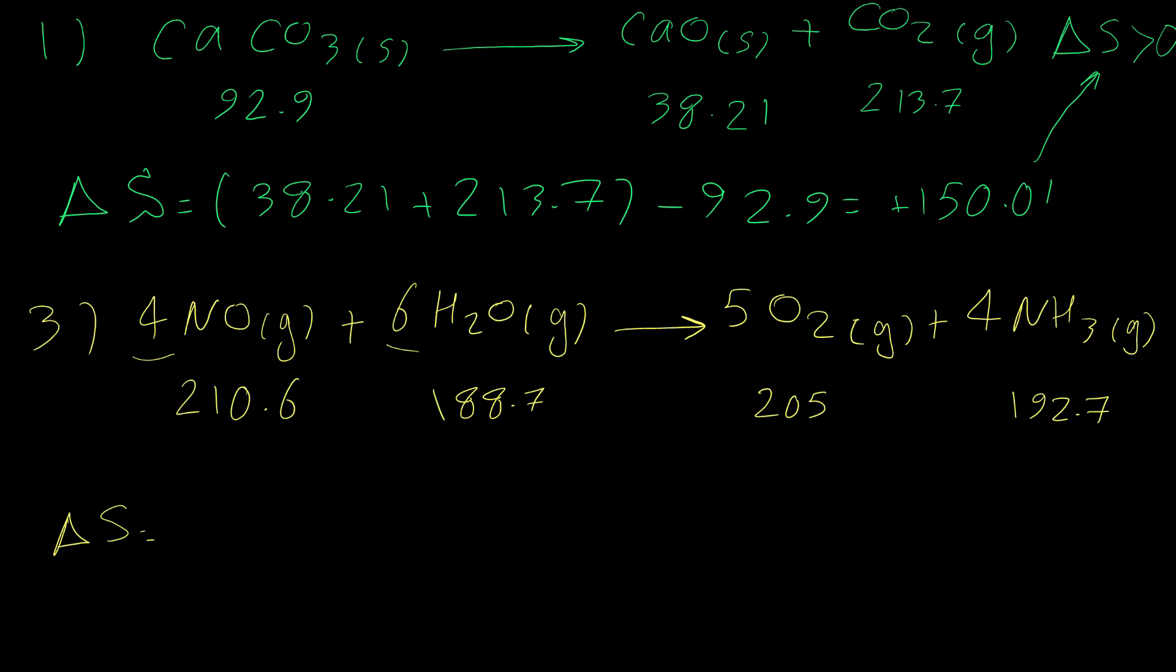For the third example, again delta S equals products, so for oxygen we have 5 oxygen, then 5 times 205 plus, and we have 4 ammonia, 4 times 192.7, minus reactants. For nitrogen oxide, mononitrogen oxide, we have 4 more, so 4 times 210.6 plus 6 times 188.7, and the answer is negative 178.8. This is again matched with our prediction that we predicted this reaction has a negative delta S.